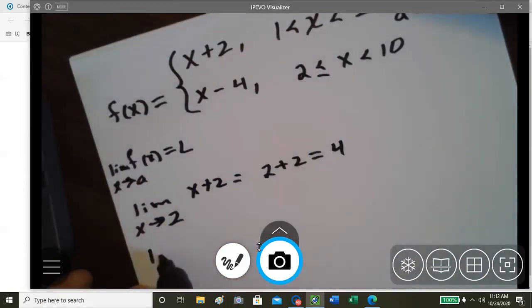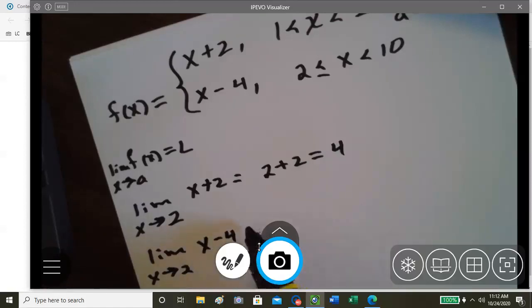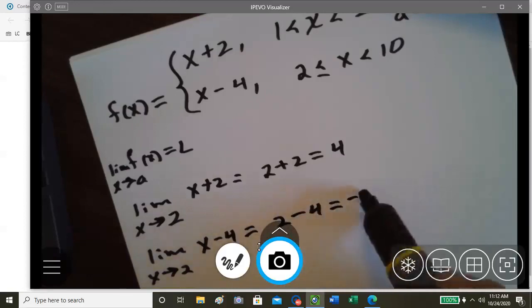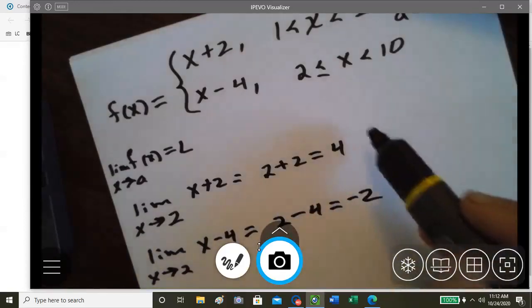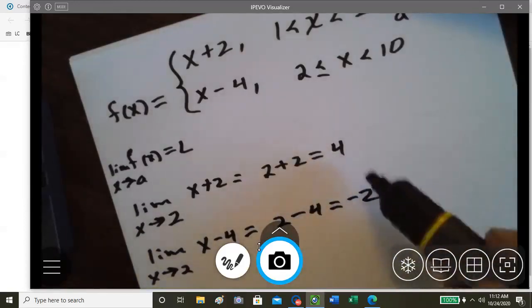So now we apply the limit as x approaches 2 for x minus 4, and we get 2 minus 4 is negative 2. So we can see here that the limit does not exist from both the left and the right.